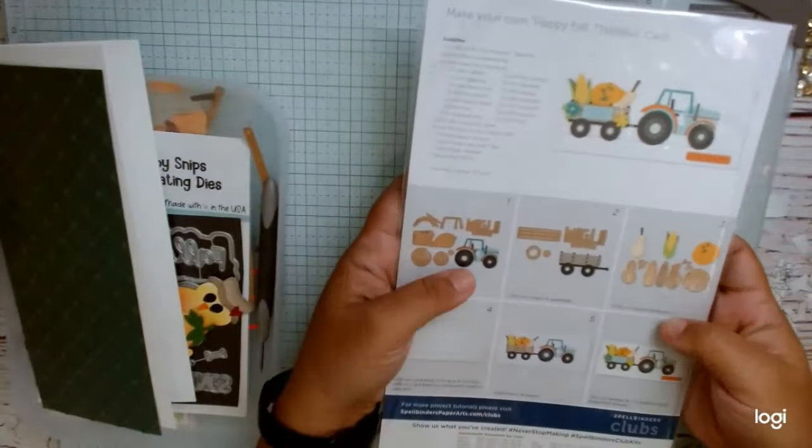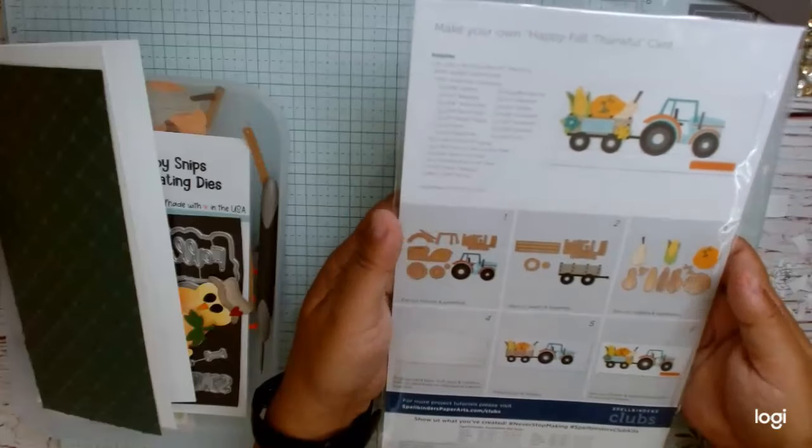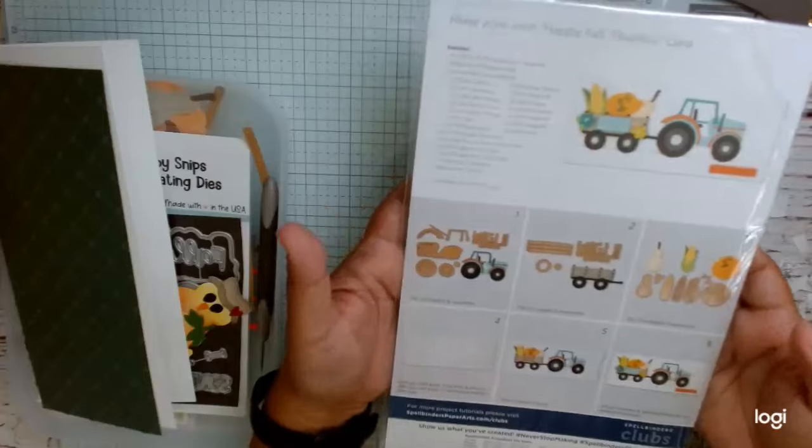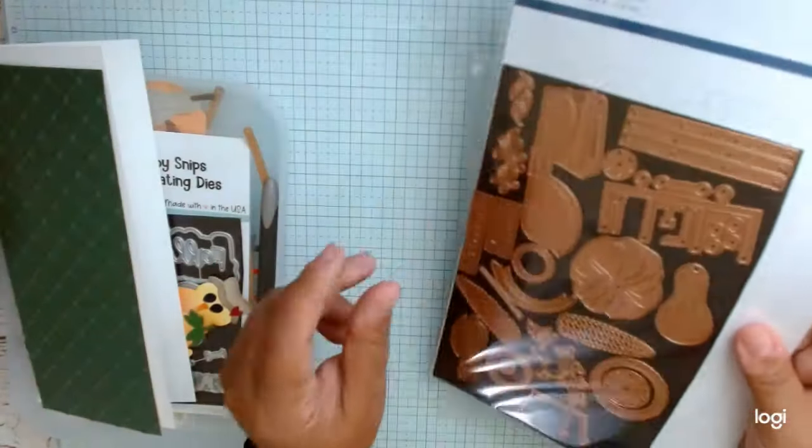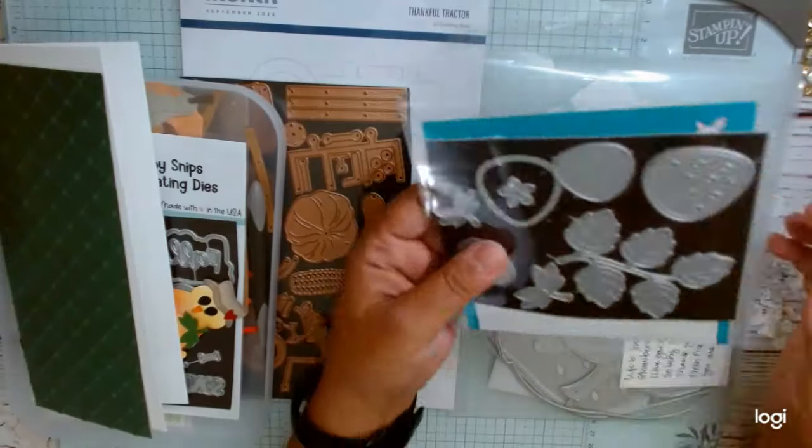This is called Thankful Tractor, and this was a large die of the month at one time, and I think it was a large die. September 2022, I got this for $5 in a recent clearance sale. I don't know that I would have picked it up if it wasn't $5, but it made some super cute cards.